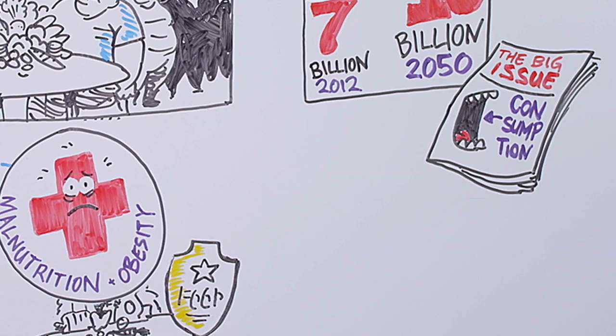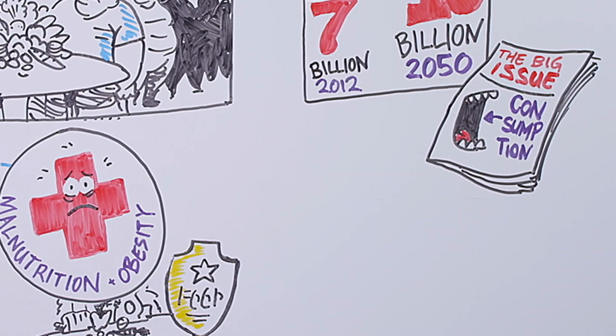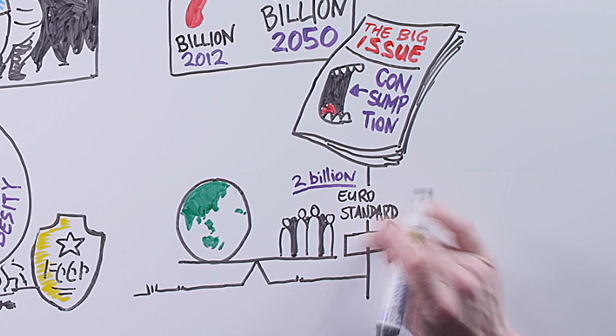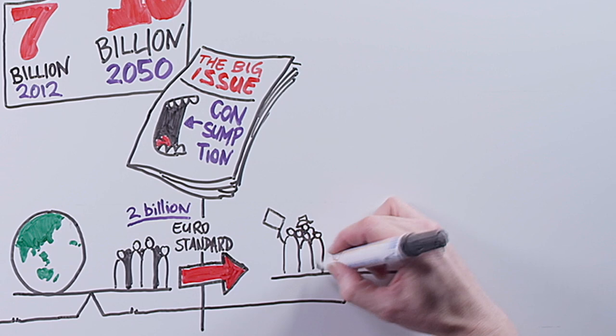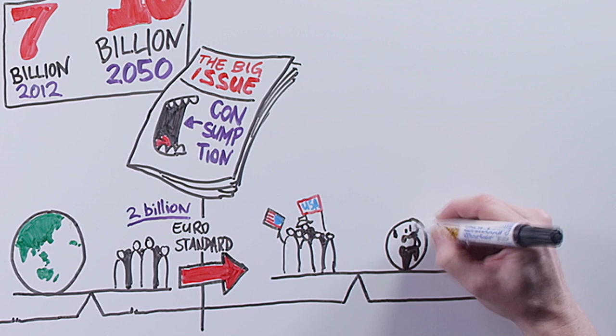It would be okay if we all consumed like Kenyans, but we don't. The Earth's resources are enough to sustain only about 2 billion people at the European standard of living. Because on average, Europeans, like the average Australian, consumes far more resources than any of the poorest 2 billion people in the world.